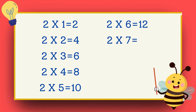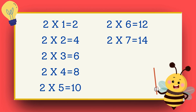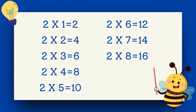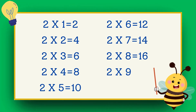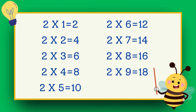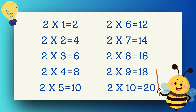Two sevens are fourteen. Two eights are sixteen. Two nines are eighteen. Two tens are twenty.